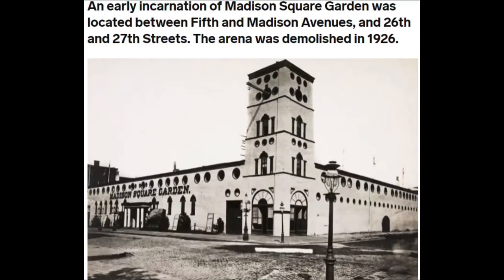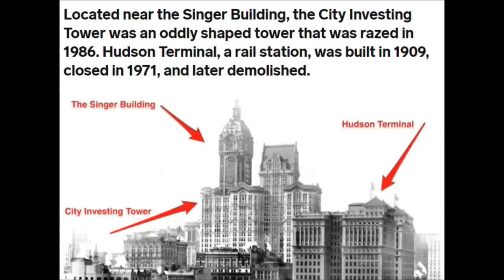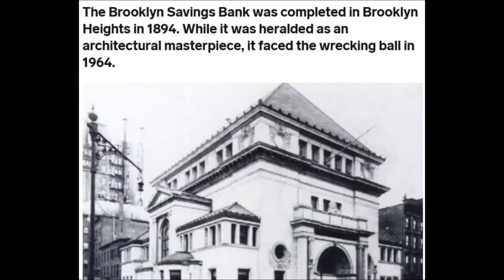A version of Madison Square Garden without a completion date was demolished in 1926. The historic Hotel Astor stood for only 63 years, between 1904 and 1967, before it was demolished and replaced by a high-rise. All three of these buildings in Manhattan were demolished, with the Singer Building completed in 1908 and demolished in 1968, along with the City Investing Tower the same year, the Hudson Terminal Rail Station demolished after closing in 1971, and the Brooklyn Savings Bank completed in 1894 and demolished in 1964.